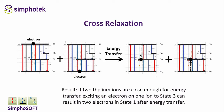Thulium has the property that cross-relaxation can occur. For example, if you have two thulium ions and pump one from the ground state into state 3, and that ion is adjacent to another ion that has not been pumped with its electron still in the ground state, you can get energy transfer between the two ions such that the electron in state 3 goes to state 1, and for the other ion the electron in state 0 goes to state 1. So effectively, you can pump one ion into state 3, and that results in two electrons in state 1 after energy transfer.